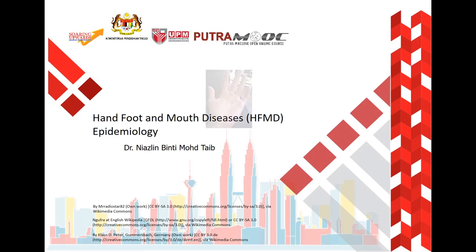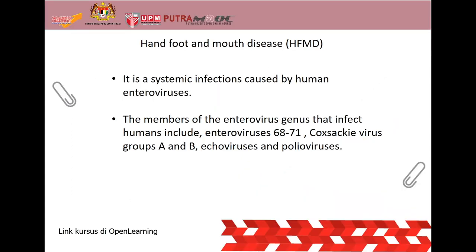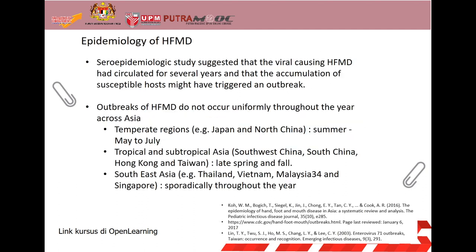This video is about epidemiology and pathogenesis of hand, foot and mouth disease. HFMD is a systemic infection caused by human enterovirus. The members of the enterovirus genus that infect humans include enteroviruses 68 to 71, Coxsackie virus group A and B, echovirus, and poliovirus.